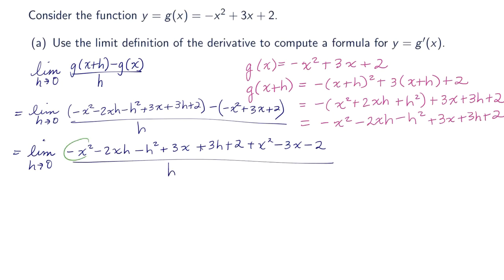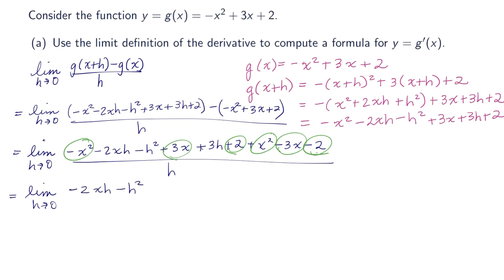Now we have like terms. Negative x squared plus x squared is 0. Plus 3x minus 3x is 0. And 2 minus 2 is 0. We're left with negative 2xh minus h squared plus 3h, all over h. Factoring h from the numerator gives h times negative 2x minus h plus 3.